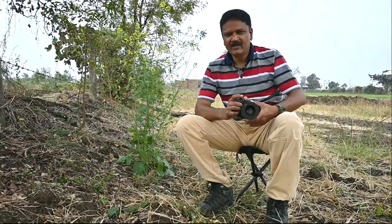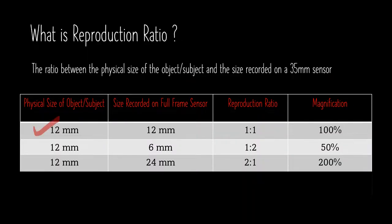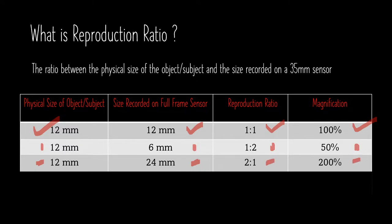For example, if you have an object measuring 12 millimeters in actual life and it is recorded as 12 millimeters on a full frame sensor, the reproduction ratio is 1:1 and the magnification is 100%. But if that 12 millimeters is recorded as 6 millimeters, the reproduction ratio becomes 1:2 and the magnification is 50%. Reciprocally, if that 12 millimeters is recorded as 24 millimeters, the reproduction ratio becomes 2:1 and the magnification is 200%.